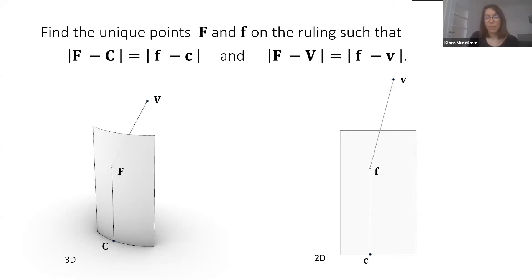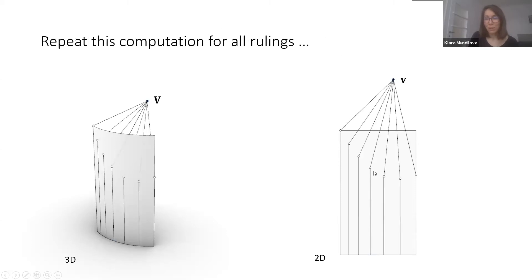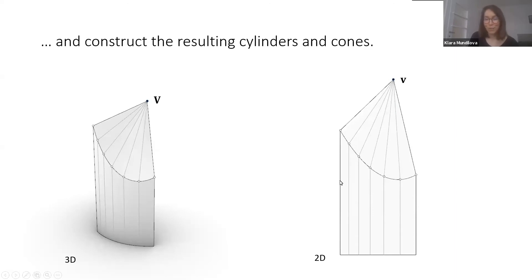Those distance constraints are that the distance between F and V in 3D is the same as the distance between the two corresponding developed points. Also the distance between a fixed point on the ruling to F is the same distance as between the developed point and f. We do this for all rulings, and this gives us the unique crease curve that would fold a given cylinder into the cone with a specified 3D and 2D apex.